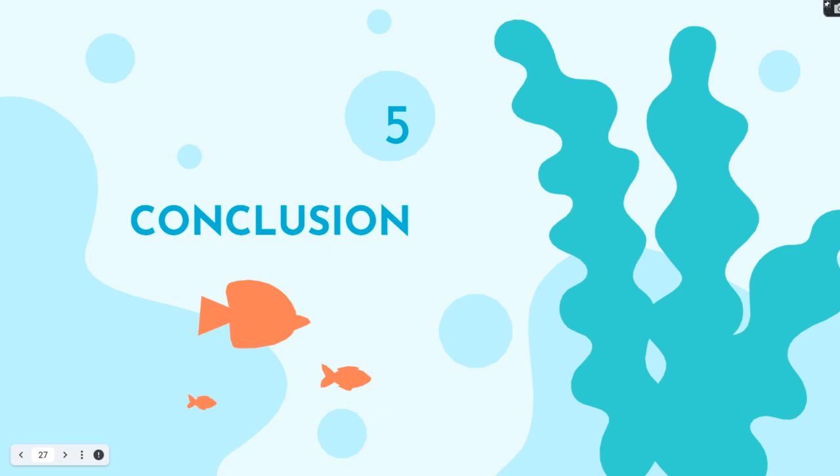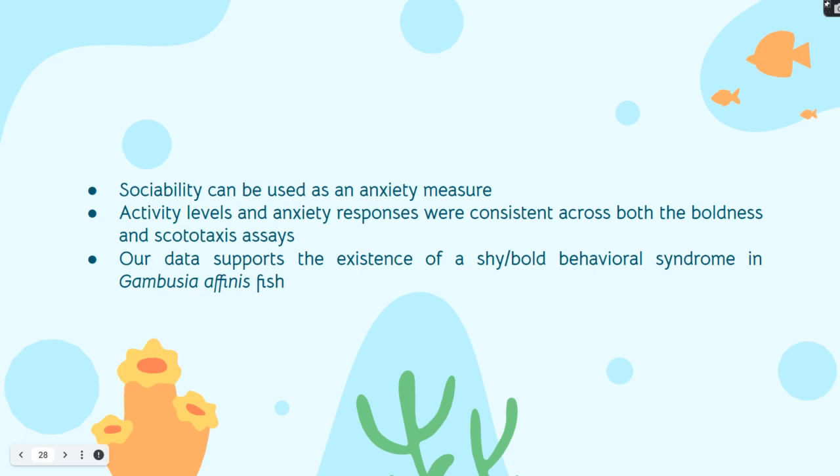In conclusion, we found that our data helped us establish that coping styles can help predict behaviors. We found that sociability can be used as an anxiety measure and that activity levels and anxiety responses were consistent across both the boldness and scototaxis assays. This supports the existence of a shy bold behavioral syndrome in Gambusia afanis fish.